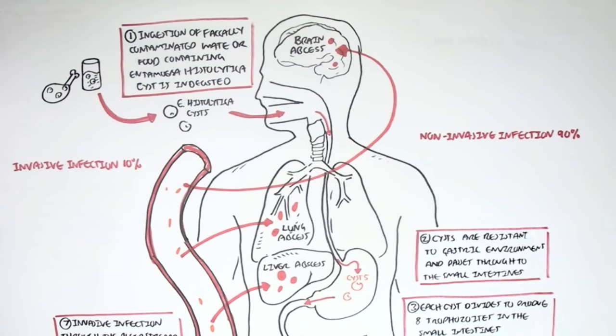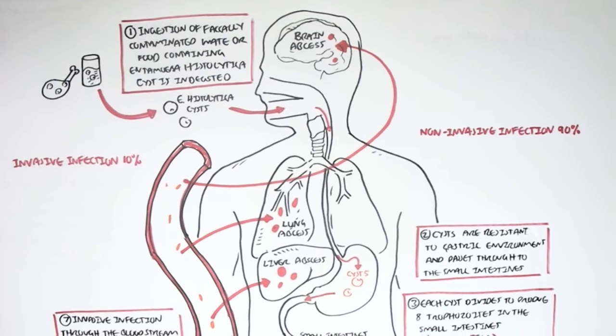It can cause brain abscesses formation. Essentially, from all this, we know that the invasive infection, which constitutes about 10% of Entamoeba histolytica infections, is very serious.